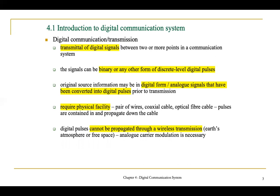Digital communications require a physical facility, for example a pair of wires, coaxial cable, or optical fiber cable. It is very important to note that digital pulses cannot be propagated through a wireless transmission, such as through the earth's atmosphere or free space. In order to overcome this, analog carrier modulation is necessary for the signal to be propagated through a wireless transmission.